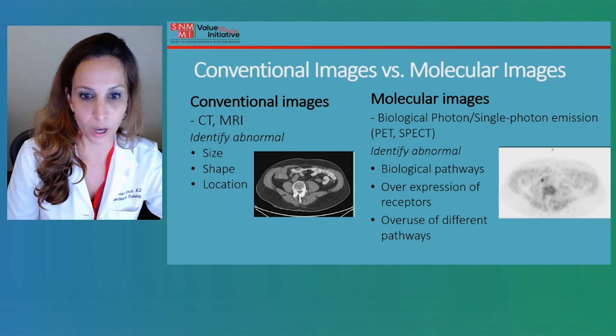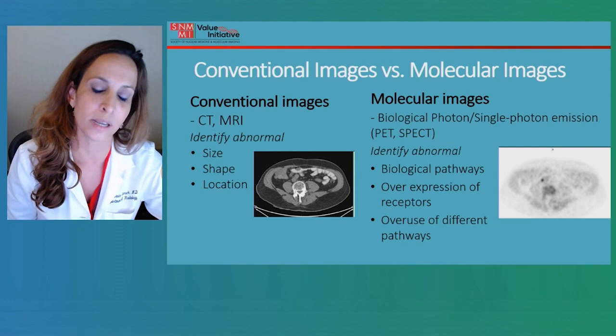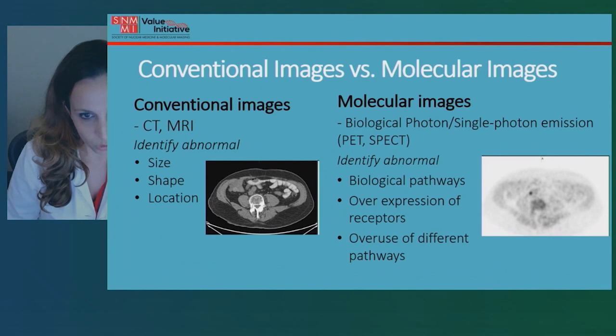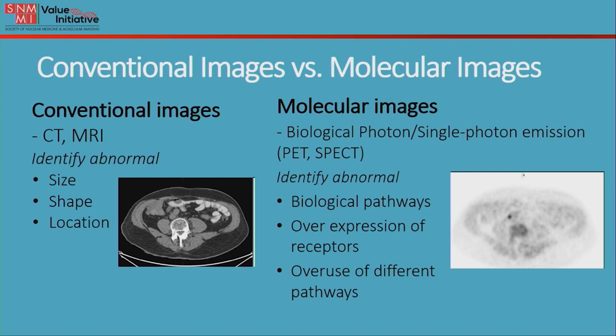Before I go into the topic of fluciclovin, I would like to explain the differences between conventional images and molecular images. Conventional images are usually referred to as CT and MRI, which means that by using magnetic fields or x-rays, we can create really nice and detailed images of our anatomy. We then take that anatomy compared to what we know, and we try to look for sites that are showing abnormal areas by size, by shape, and by location.